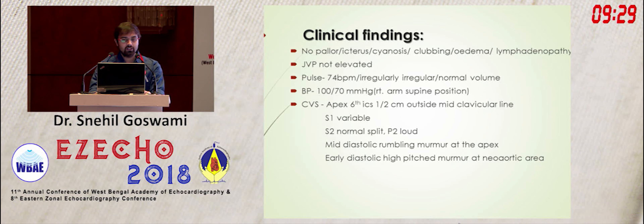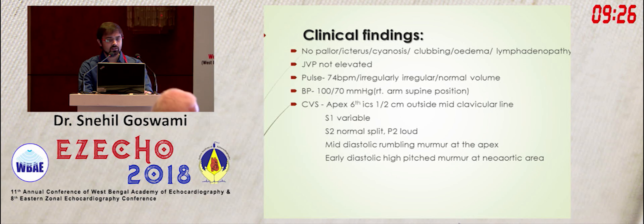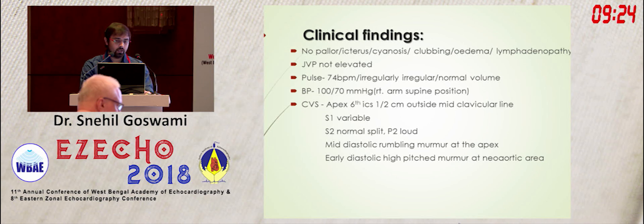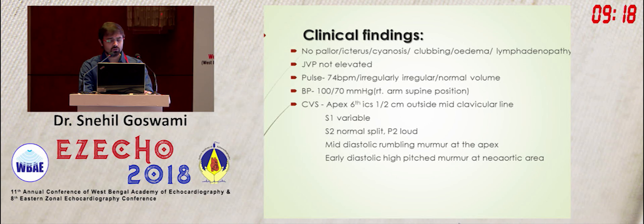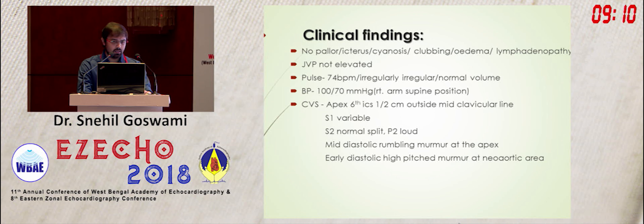Blood pressure was 100/70 in the right arm supine position. On cardiovascular examination, the significant findings were: apex was in the 6th intercostal space, half a centimeter outside the mid-clavicular line. S1 was of variable intensity. S2 was normally split, and the P2 component was loud. There was a mid-diastolic rough rumbling murmur at the apex and an early diastolic high-pitched murmur at the aortic area.